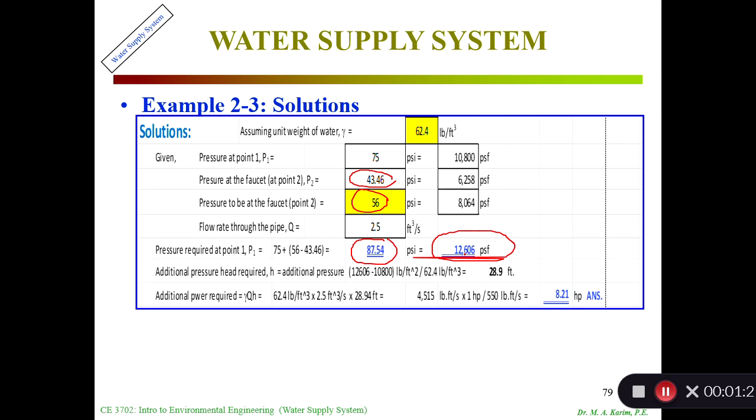Additional pressure means I have already this total I need, I have available 10,000 PSM, so the difference will give me how many PSF I need additional. That's why this minus this, divided by 62.4 pounds per cubic foot, will ultimately give me feet. I get the additional pressure head.